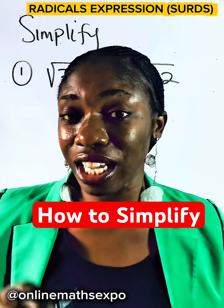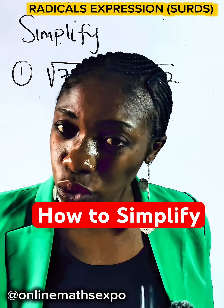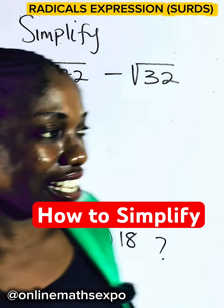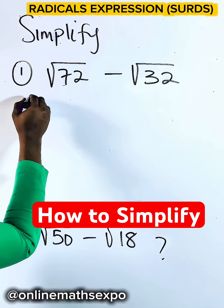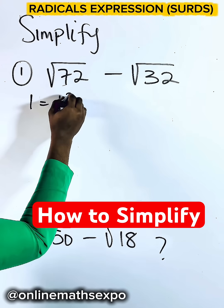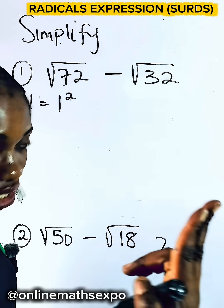Square numbers are those numbers you can express as squares of another number. For example, 1 is a square number because 1 equals 1 squared, that is 1 multiplied by itself.